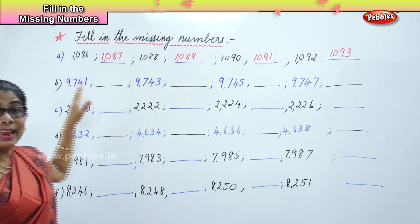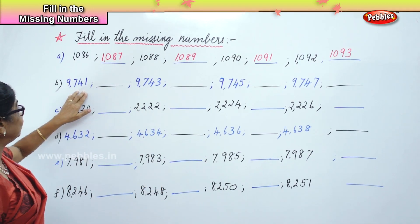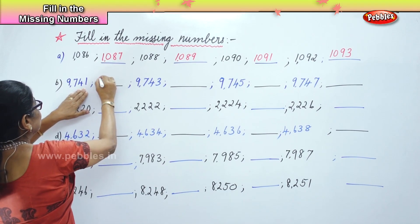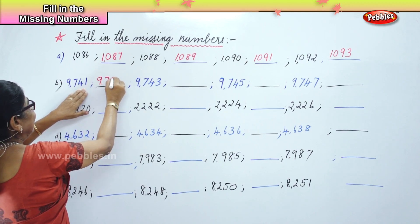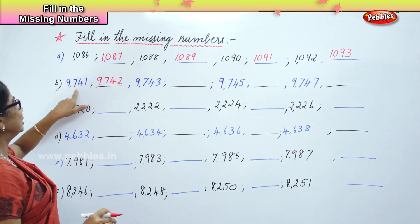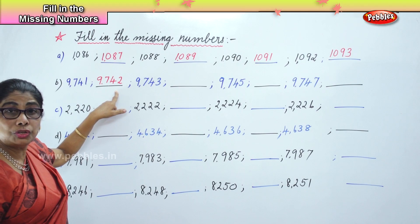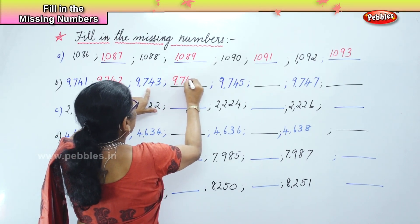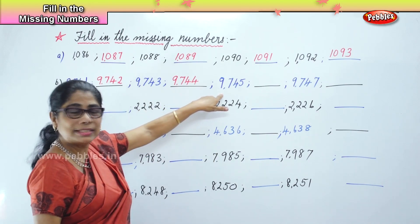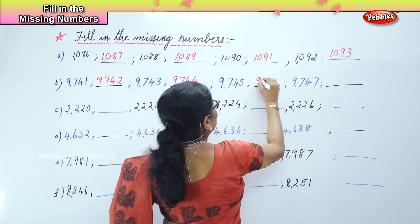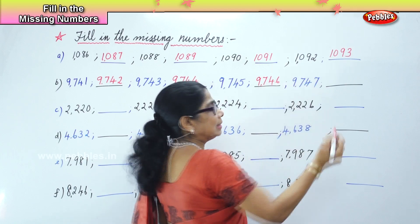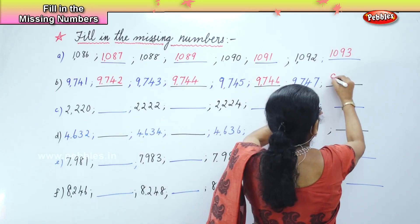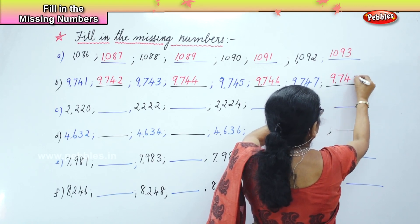Now, the next missing number — you have 9741, and the next number is 9743. So, what is the next number? 9742. So you have 9741, 9742, 9743, and the next number 9744. Very good. And the next number 9745, next number 9746, and the next number is 9747. What will be the next? 9748. Good.